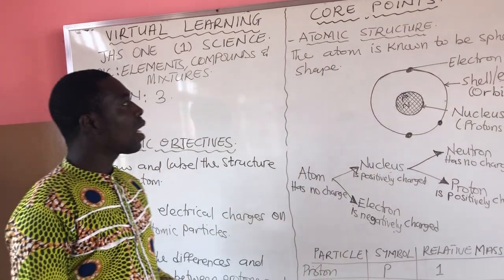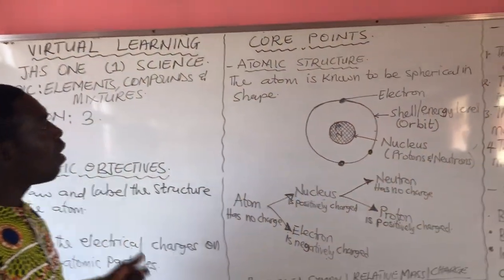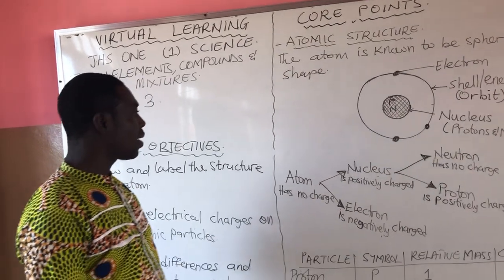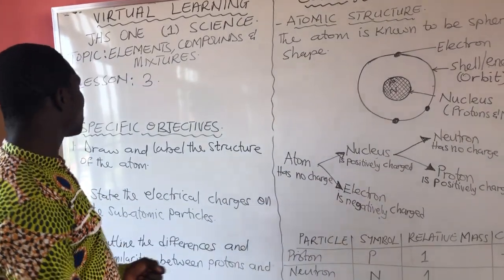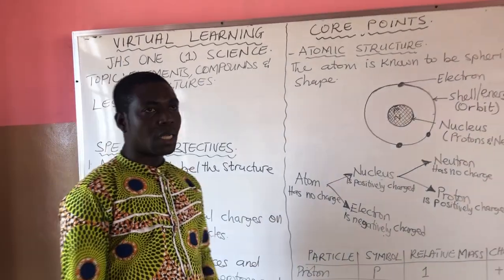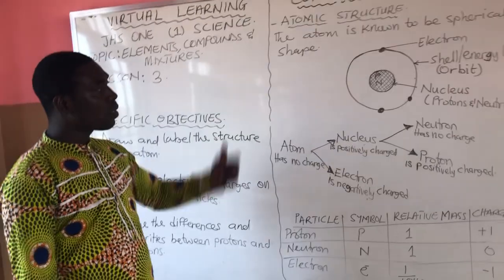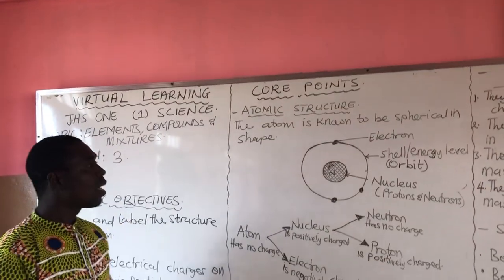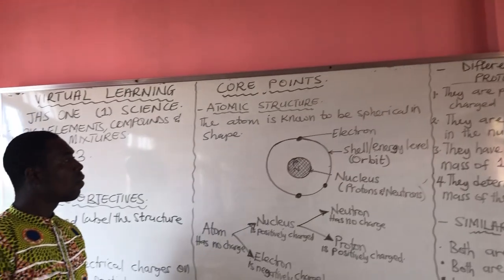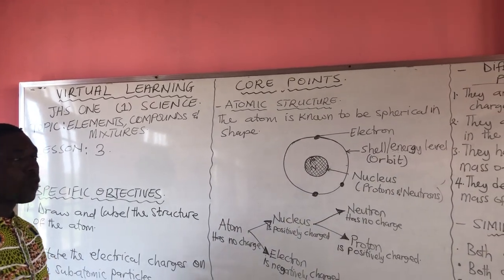Today we are looking at the atom — the structure of the atom or atomic structure. In our previous lessons, we talked about elements, compounds and mixtures. We came across particles of elements, and that is what the atom is. We learned that the atom has subatomic particles.